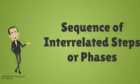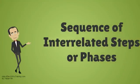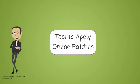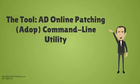The Online Patching Cycle is a sequence of interrelated steps or phases used in patching. The AD Online Patching Command Line Utility is used to manage the Online Patching Cycle.